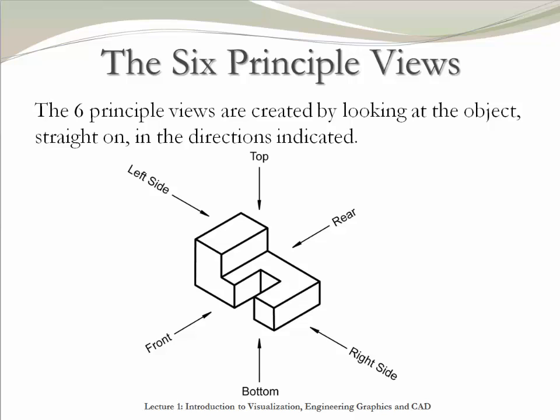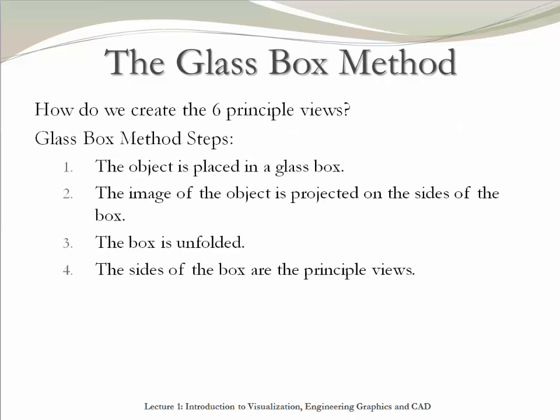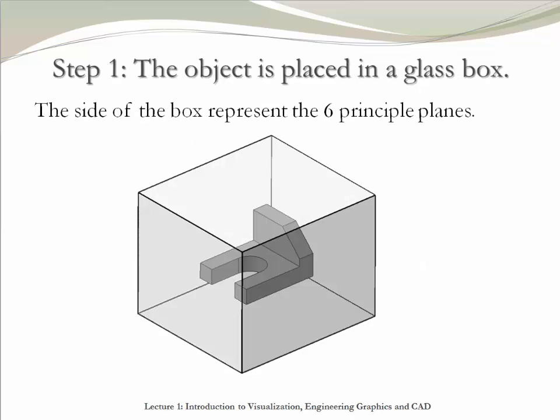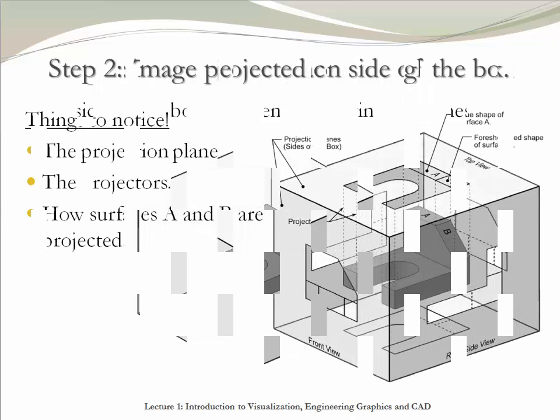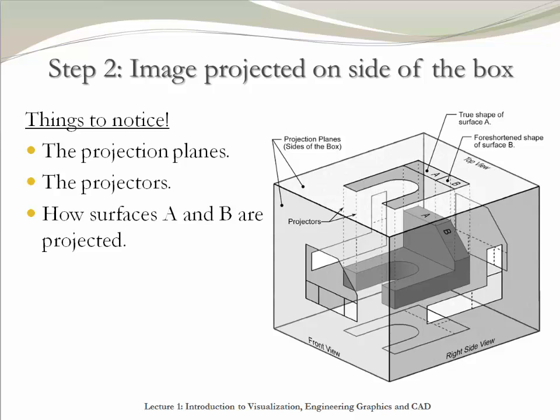Let's now learn how to convert an isometric object into an orthographic projection. This is done by using the six principal views: top, bottom, front, rear, right, and left. These views are created by looking perpendicular to each surface — like taking a picture straight on into each surface. The method used is the glass box method. The first step is to place the object inside the glass box, where each side of the box represents one of the principal views. The second step is to project all the object surfaces — the projectors — onto the glass planes, which are the projection planes.